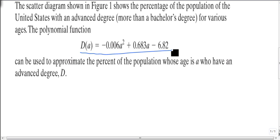In other words, since this function shows the percentage of the U.S. population with advanced degrees by age, I want to use this function to find the approximate percentage of people 65 and older with advanced degrees.